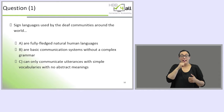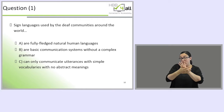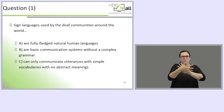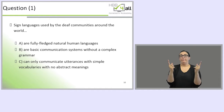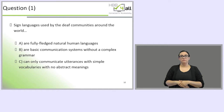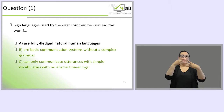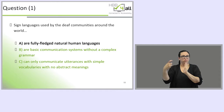Now that we are at the end of the first section, I have a question for you. Sign languages used by deaf communities around the world are: a) fully-fledged natural human languages, b) basic communication systems without a complex grammar, or c) they can only communicate utterances with simple vocabularies and no abstract meanings. The correct answer is of course A — natural sign languages are fully-fledged natural human languages.